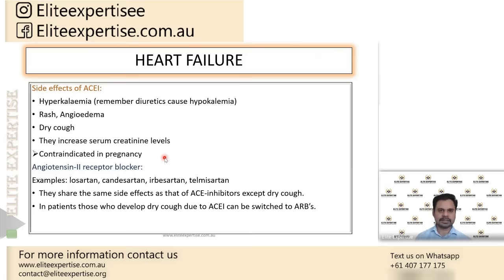Regarding side effects of ACE inhibitors: the first is hyperkalemia — they increase serum potassium levels, whereas diuretics decrease serum potassium levels. The second adverse effect is rash and angioedema. ACE inhibitors also cause dry cough. Angioedema, dry cough, and rash are all due to increasing bradykinin levels. ACE inhibitors prevent the hydrolysis or degradation of bradykinin in the body, so bradykinin levels increase, leading to dry cough, angioedema, and rash.